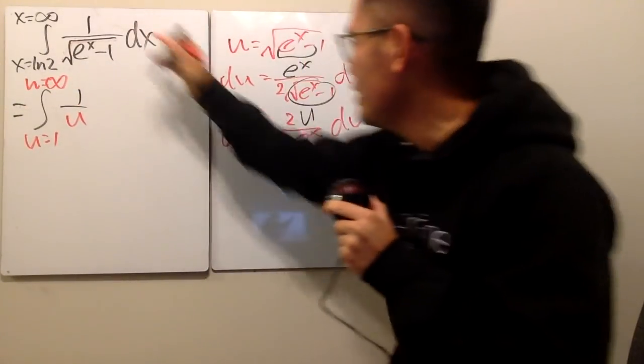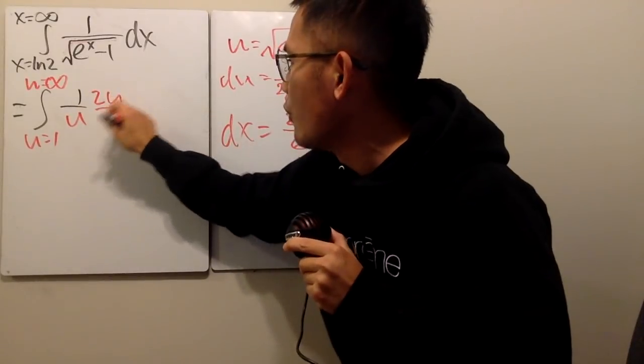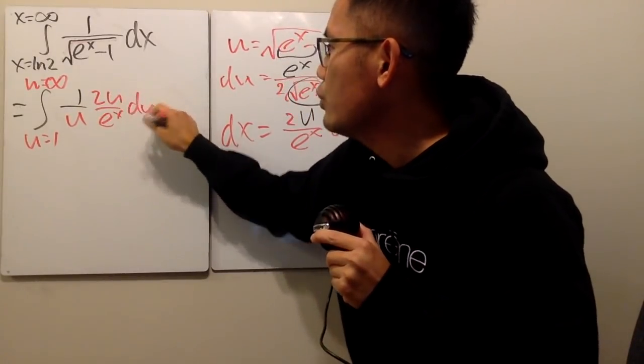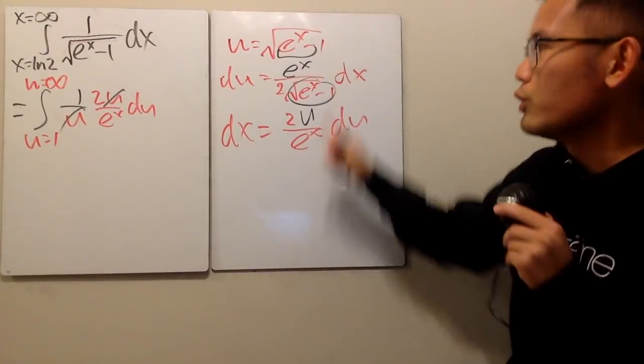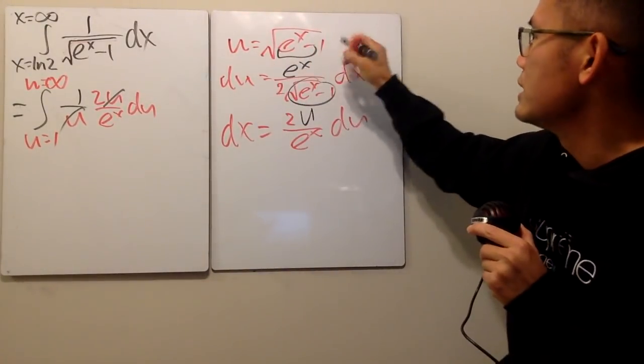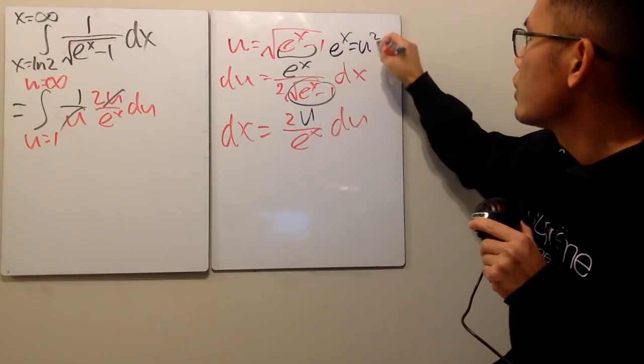And this right here is 1 over u, and dx is the same as 2u over e to the x, and then we have this in the u world. And you see that u cancels out. But the problem is that e to the x is what? Well, look back here. Square both sides, add one to both sides, we see that e to the x is nicely equal to u squared plus 1, isn't it?